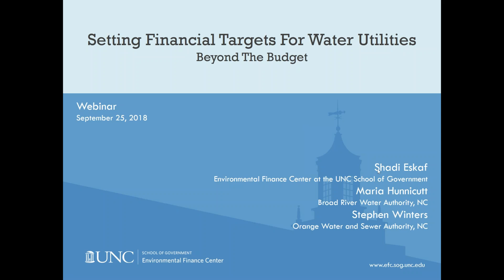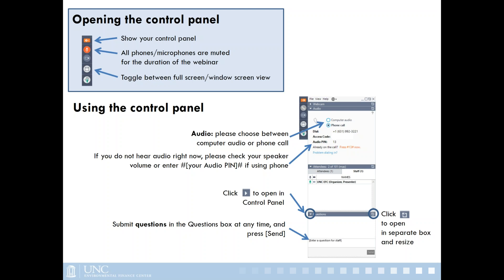Before we get started, I want to make sure everybody is able to hear me. Just quick housekeeping: everybody's muted on this call. If during the presentation the control panel disappears, you can click on that red arrow at the top to open it and toggle between full screen and window view. Please follow the instructions to connect through audio — we recommend phone call for a clear connection, but speakers will also work fine. If you have any questions at any point, please submit them in the questions box.